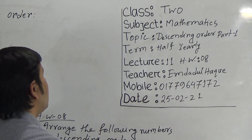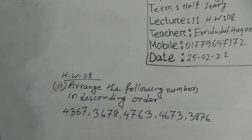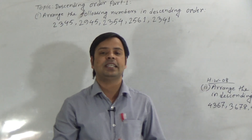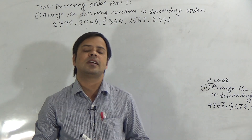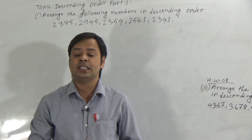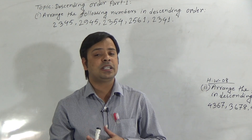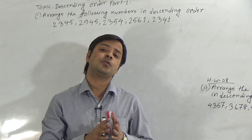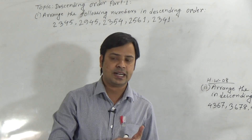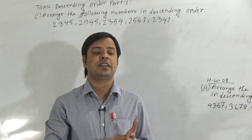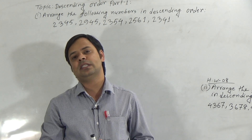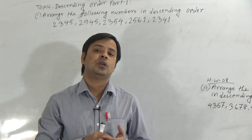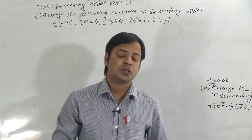In this part we will learn how to arrange some numbers in descending order. To arrange numbers in descending order, we first have to know what descending order means. Descending order means the order in which numbers are arranged from larger to smaller. Smaller to larger is ascending order, and larger to smaller is descending order. So we have to arrange the given numbers from greater to smaller.